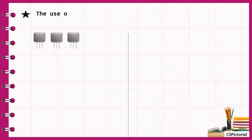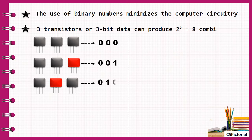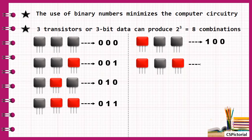Binary numbers also minimize the computer circuitry. A set of just 3 transistors or 3-bit data can represent a maximum of 8 different combinations as shown here.